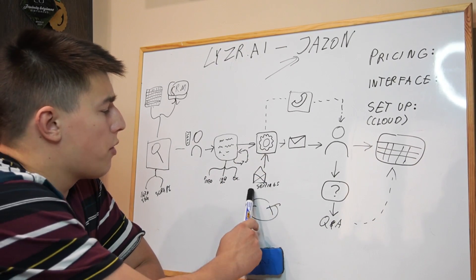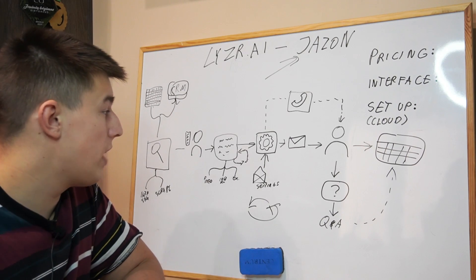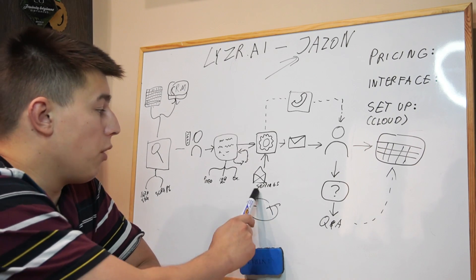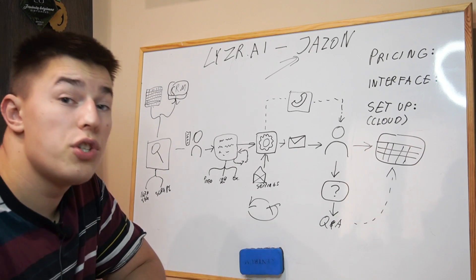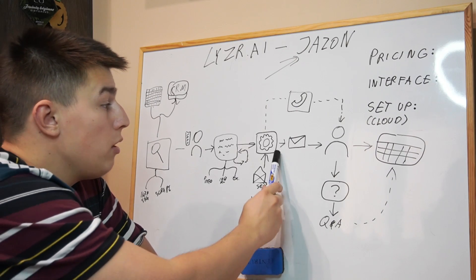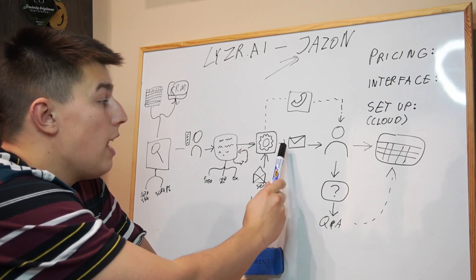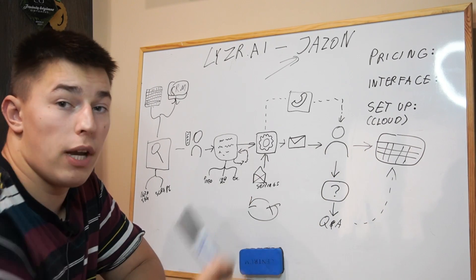Moving into the sequences themselves: you have various email configuration settings, your infrastructure, how many emails to send, warm-up — whatever. And then you send the emails to your prospects.